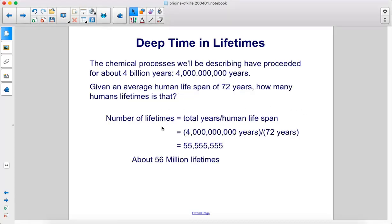Okay, so the number of lifetimes would be the total amount of years divided by the human lifespan. So 4 billion years divided by 72 years gives us about 56 million lifetimes.